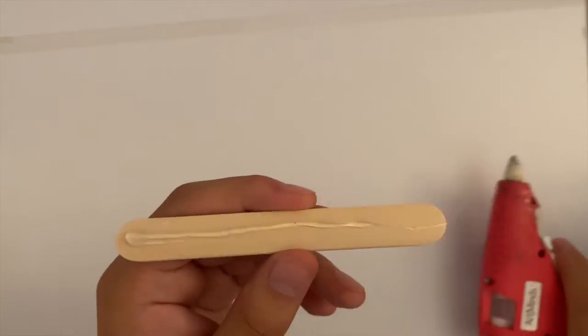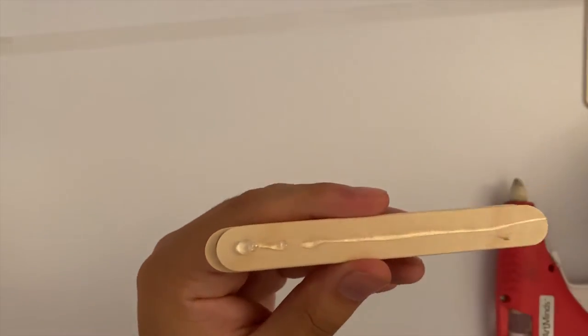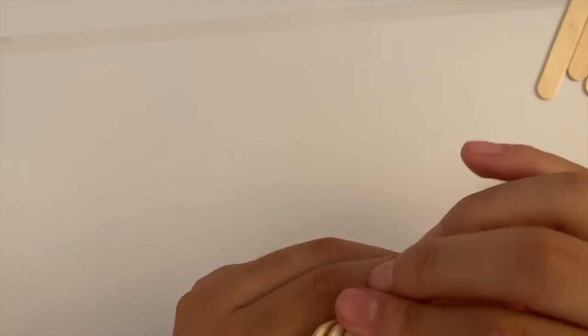Now moving along with the craft, you will start to glue together six of the wooden sticks together as being shown in the video. This will make up your structure of your plane moving forward.